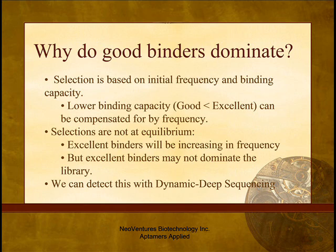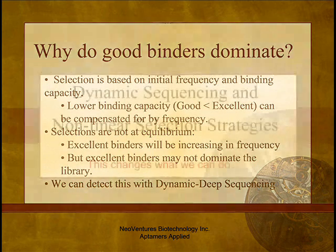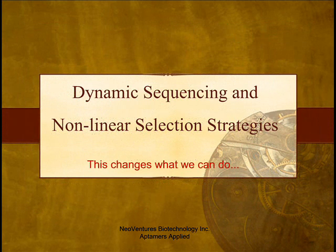While the longer motif may not dominate the final selected library, we can identify it as being better than the shorter motif because it is increasing in proportion faster. We need to do deep dynamic sequencing in order to be able to see this. Another aspect that follows the same logic is the accumulation of more than one motif in the same sequence. This will occur at a lower frequency in the initial library, but will increase in proportion more rapidly than sequences with only one motif.